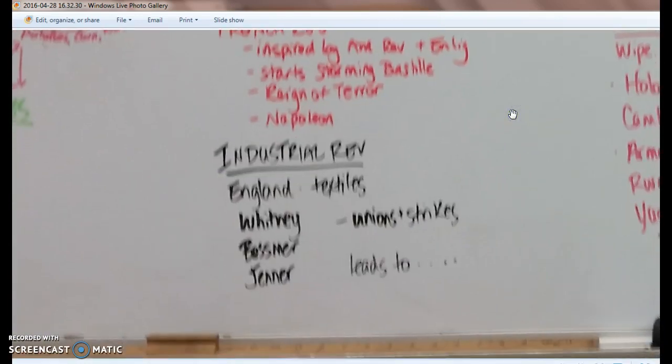The Industrial Revolution starts in England, in the textile industry, because they have lots of natural resources. Know some key inventions: Eli Whitney, Bessemer and the Steel Process, Jenner and the Smallpox Vaccine. Also know about Unions and Strikes and Collective Bargaining — all efforts to make working conditions better.